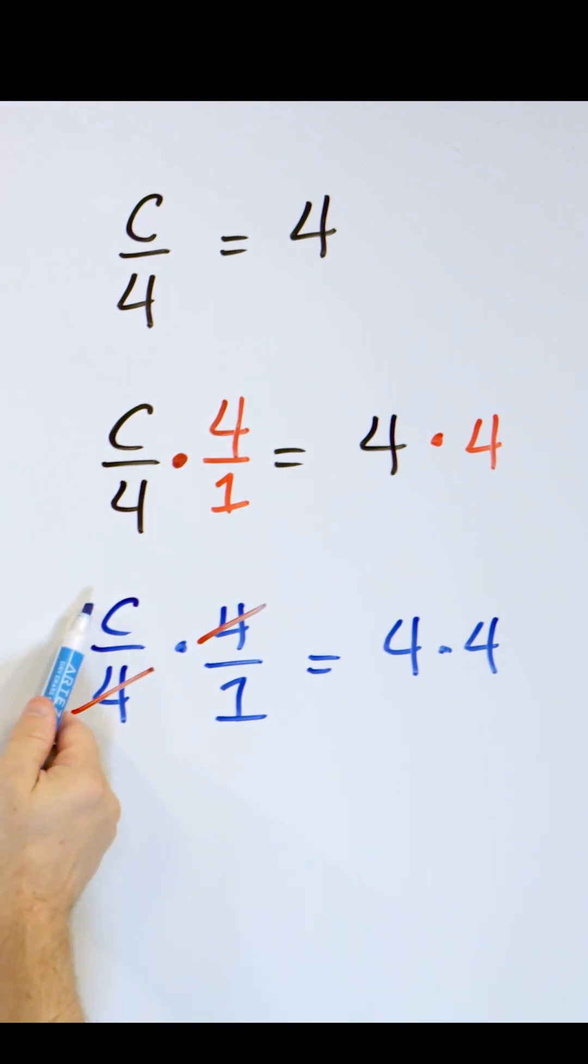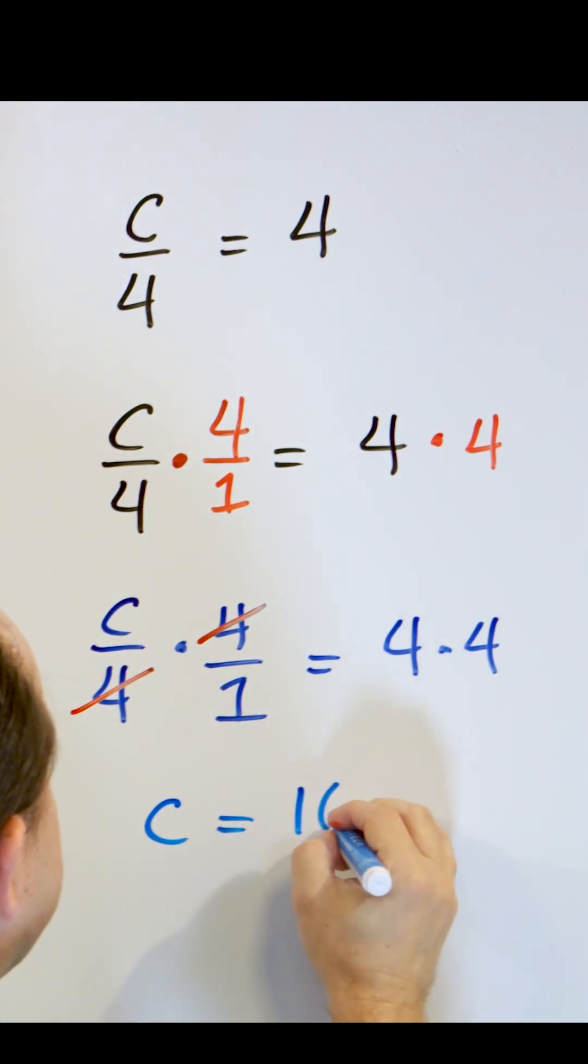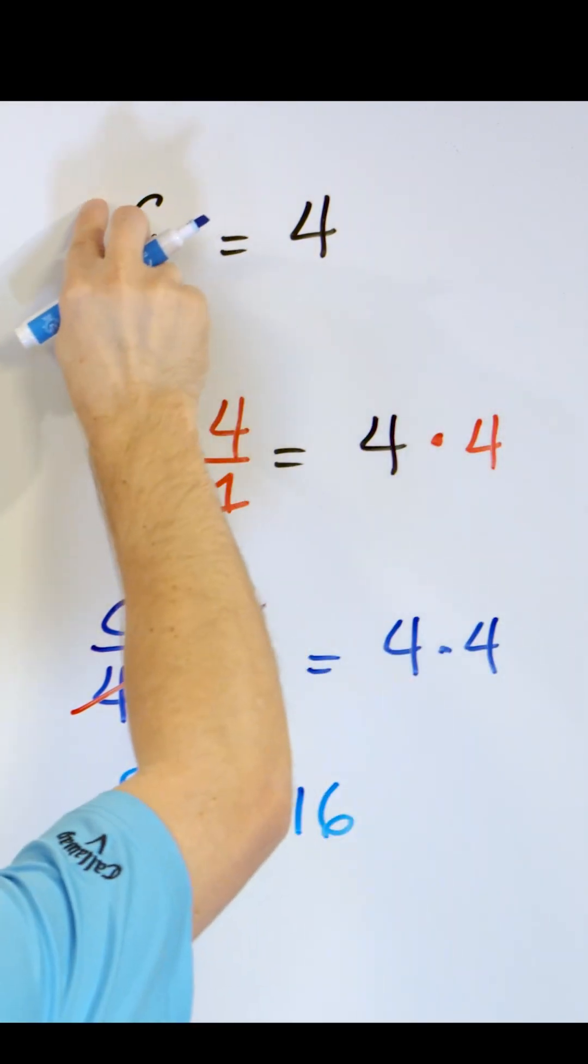And so what you have left over is just C divided by 1, which is just C. So the only thing left is C. And 4 times 4 is 16. And that's what we predicted.